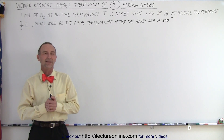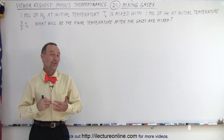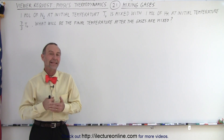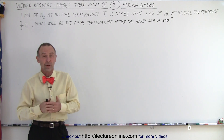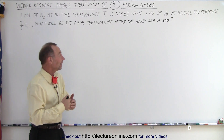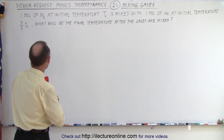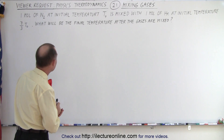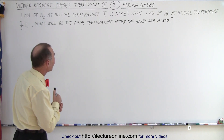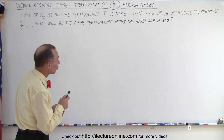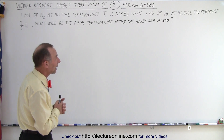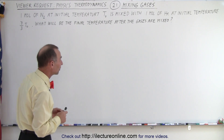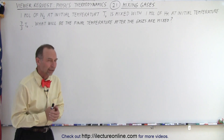Welcome to our lecture online. Here's one of the questions from our viewers. It has to deal with thermodynamics and kinetic theory of molecules — gaseous molecules in the atmosphere. So let's say that we have one mole of nitrogen, and remember that nitrogen is a diatomic molecule, and it's at an initial temperature of T₀. It is mixed with one mole of helium at an initial temperature of 7/3 T₀. What will be the final temperature after the gases are mixed?